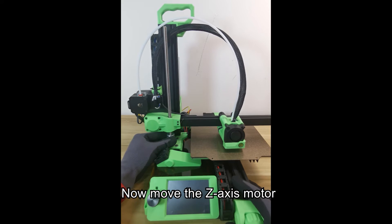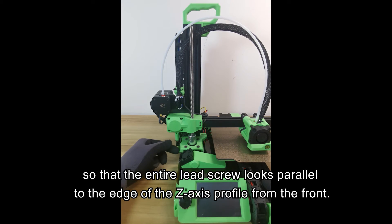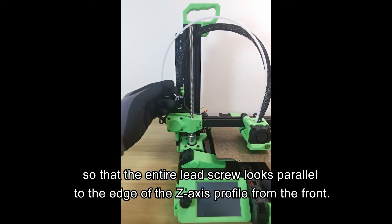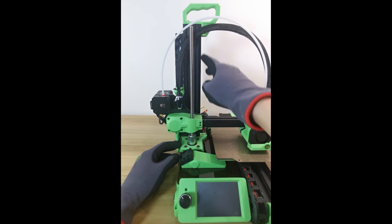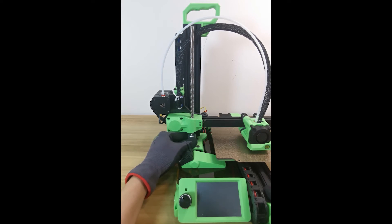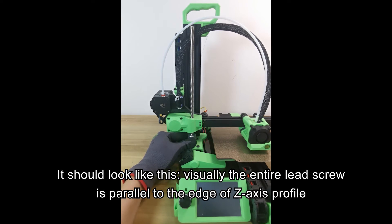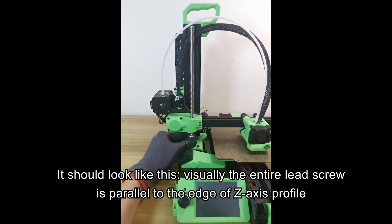Now move the Z-axis motor so that the entire lead screw looks parallel to the edge of the Z-axis profile from the front. It should look like this - visually the entire lead screw is parallel to the edge of Z-axis profile.